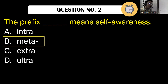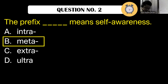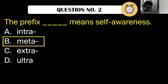On the other side or beyond the limit — choose from intra, meta, extra, and ultra — that is ultra. Beyond or outside is extra. Extra means beyond or outside. And within is intra.